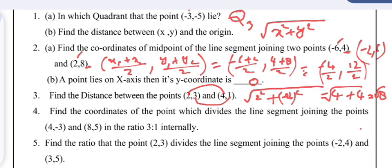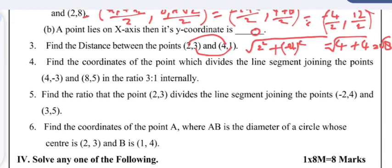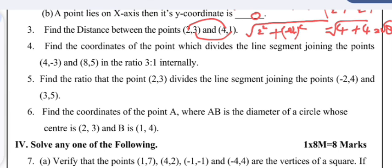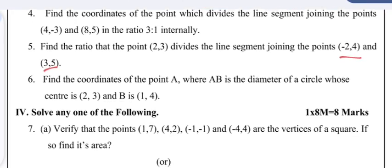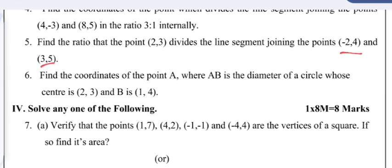Question 7: Find the ratio in which the point (2, 3) divides the line segment joining the points (−2, 4) and (3, 5). This problem is not entirely correct — something is missing, and the mistake will be explained during solving. Question 8: Find the coordinates of point A, where AB is the diameter of a circle whose center is (2, 3) and one end of the diameter B is (1, 4).